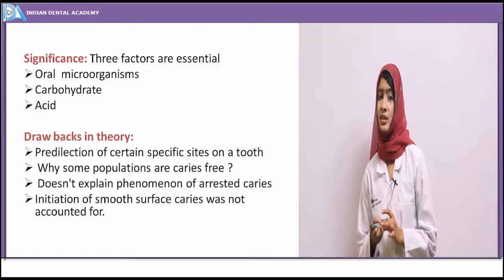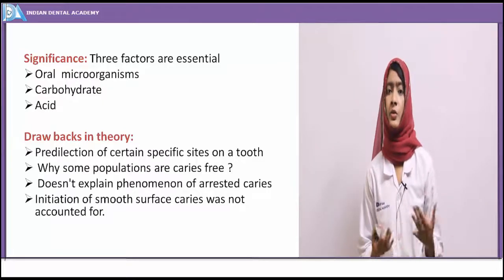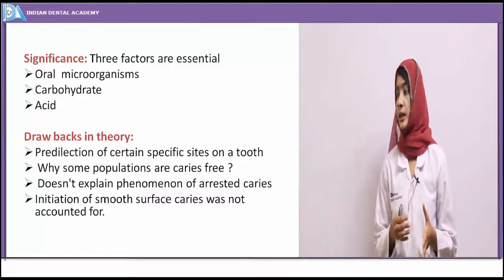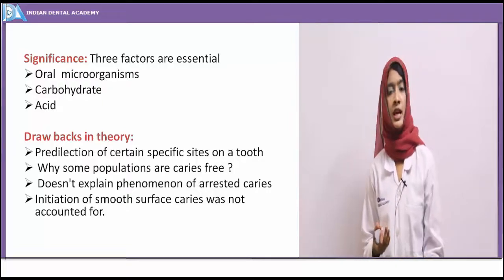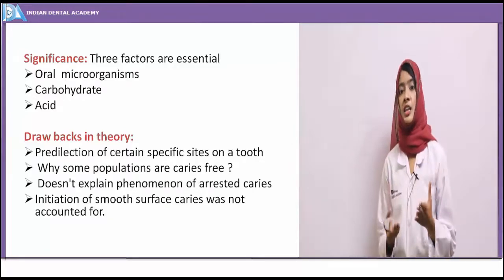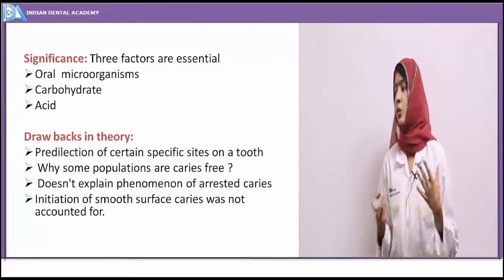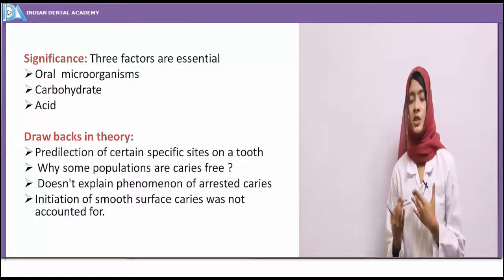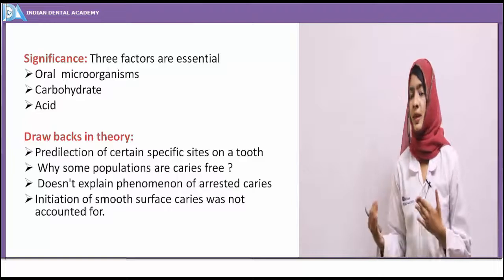There were drawbacks to Miller's theory. Miller could not identify a single microorganism responsible for caries — many microorganisms are involved. The carbohydrate content also differs between monosaccharides and polysaccharides. The theory also doesn't explain the predilection for certain specific sites on a tooth, why only certain sites show caries while others are caries-free, how smooth surface caries initiates, why some populations are caries-free, and it does not explain the phenomenon of arrested caries.